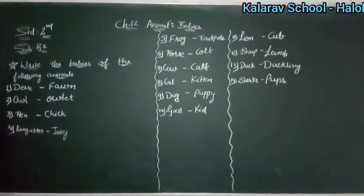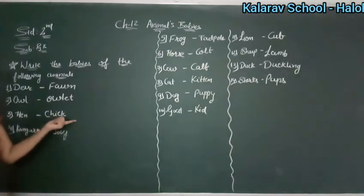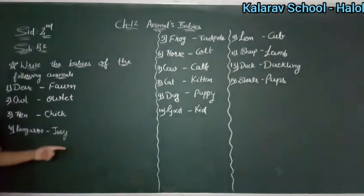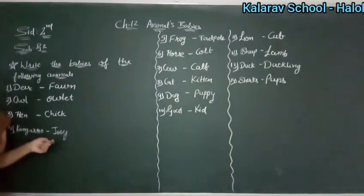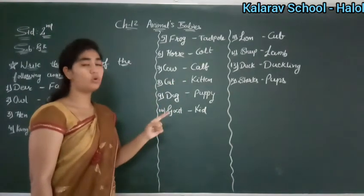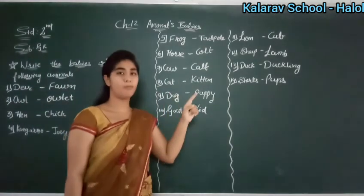Next: hen — chick. What is the spelling of chick? C-H-I-C-K. Chick. Hen — chick. Kangaroo — joey. J-O-E-Y. Joey. Kangaroo — joey. Frog — tadpole. T-A-D-P-O-L-E. Tadpole. Frog — tadpole.